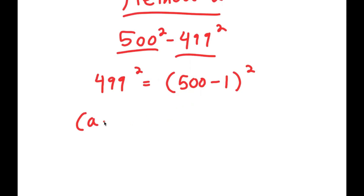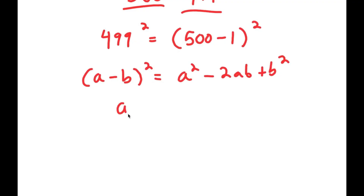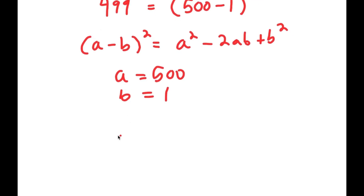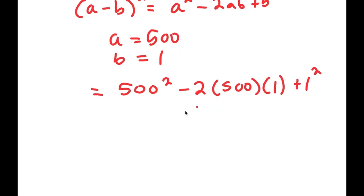If I have something in the form a minus b squared, this is equal to a squared minus 2ab plus b squared. Here a is 500 and b is 1. So this turns into 500 squared minus 2 times 500 times 1 plus 1 squared, which simplifies to 500 squared minus 1000 plus 1.